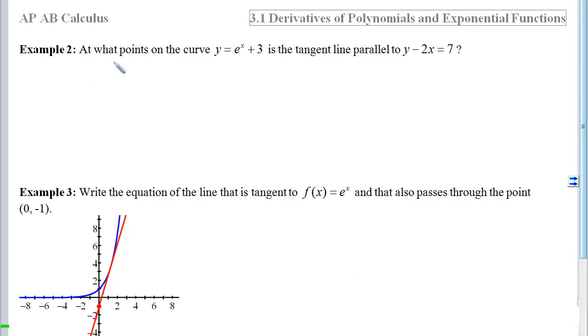With example 2, the question is, at what points on this curve is the tangent line going to be parallel to this line? So what we need to remember is that when curves are parallel to lines is the same time when the tangent slopes are the same as the line slopes. Remember, parallel means the slopes are the same.